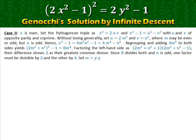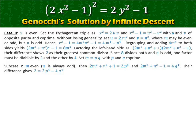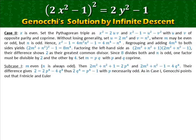Set m = pq with p and q co-prime. Sub-case one: m is even. Then the first factor equals 2p⁴ and the second factor equals 4q⁴. The difference gives 2 = 2p⁴ − 4q⁴, thus 2q⁴ = p⁴ − 1, with p necessarily odd. As in case one, Genocchi points out that Frenicle and Euler had already proved that a number twice a fourth power cannot equal the difference of two fourth powers.